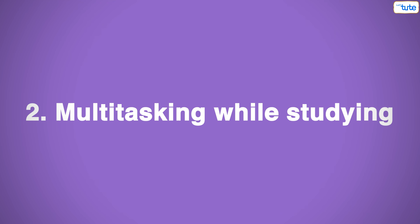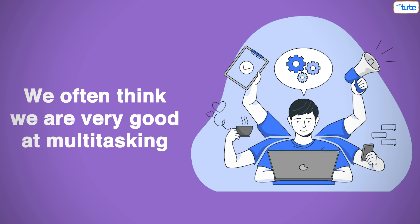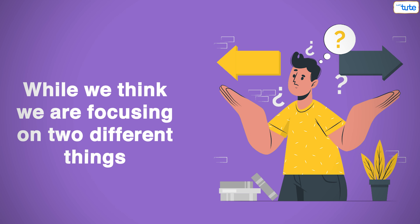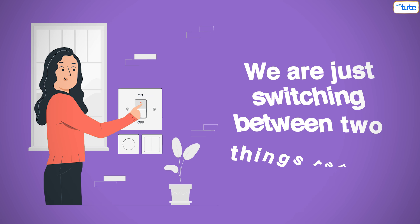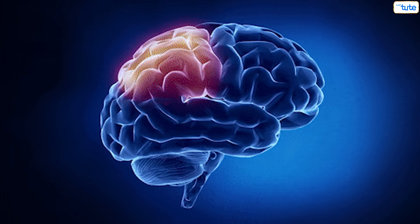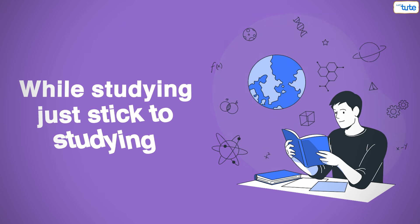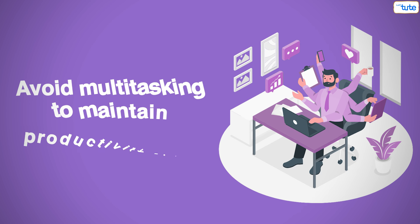Tip number 2: Multitasking while studying. We often think we're very good at multitasking, but that's not true. We're actually just switching between two things rapidly, and our brain doesn't get enough time to function between different things. So while studying, just stick to studying and avoid multitasking to maintain productivity.